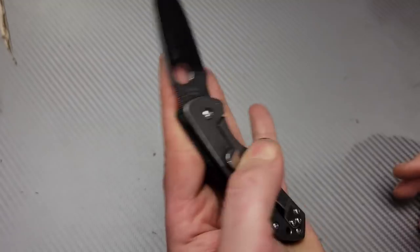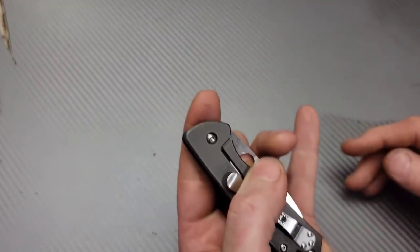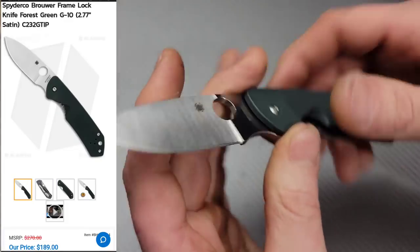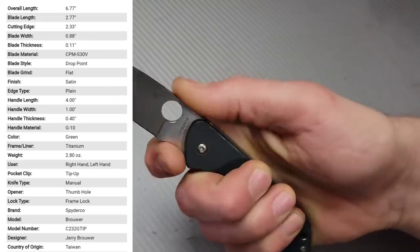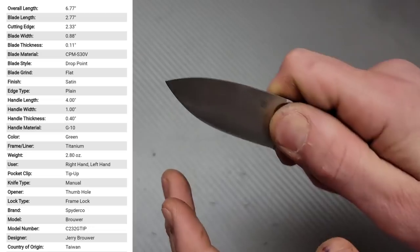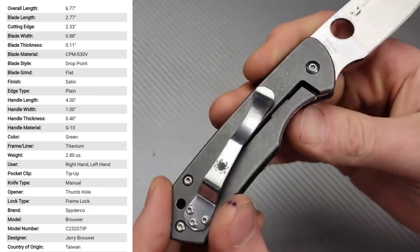The next one is the Spyderco Brower. I love this little knife. You can get a complete full grip on this knife while having a nice little cutting edge there. It is a titanium frame lock.